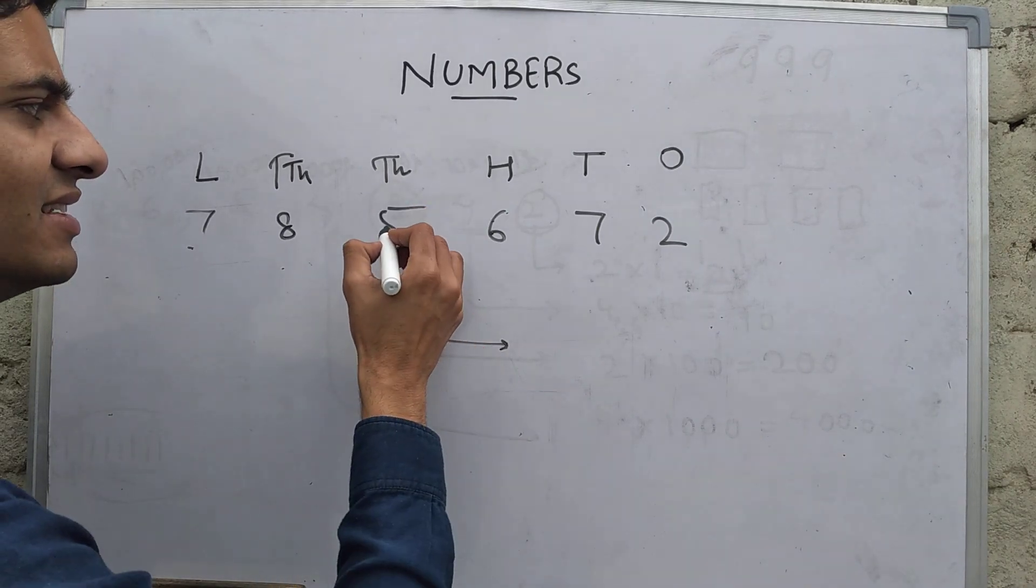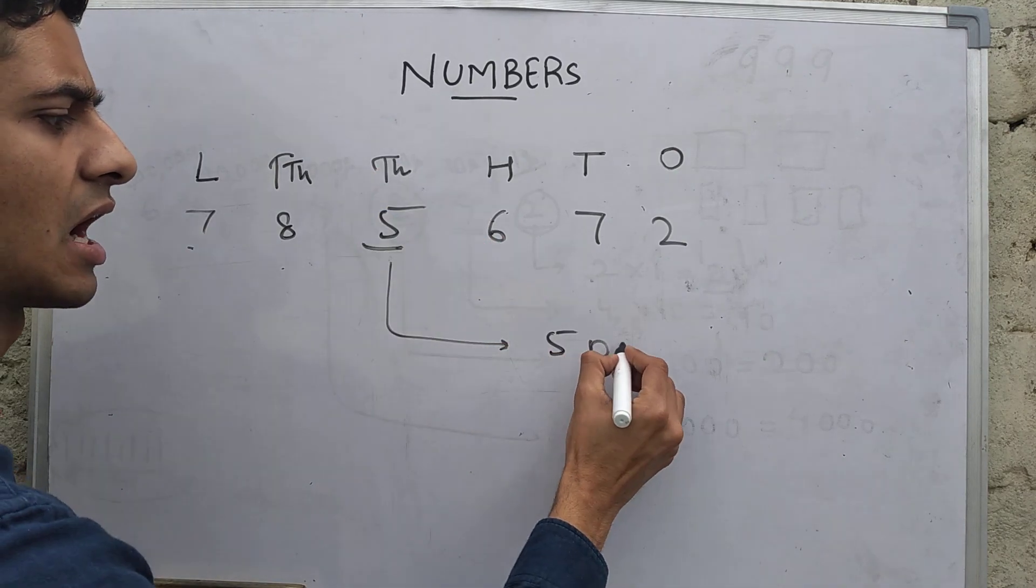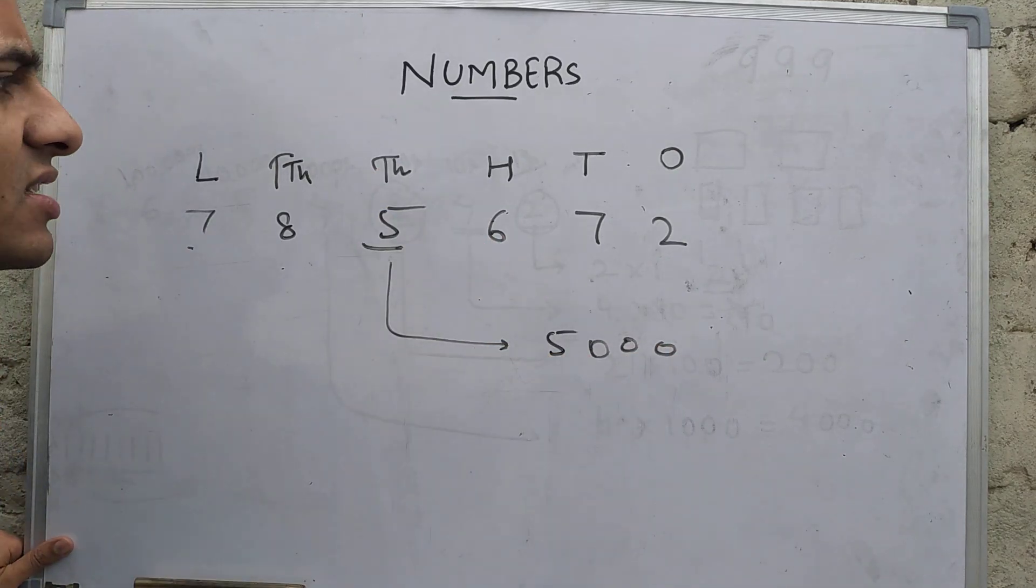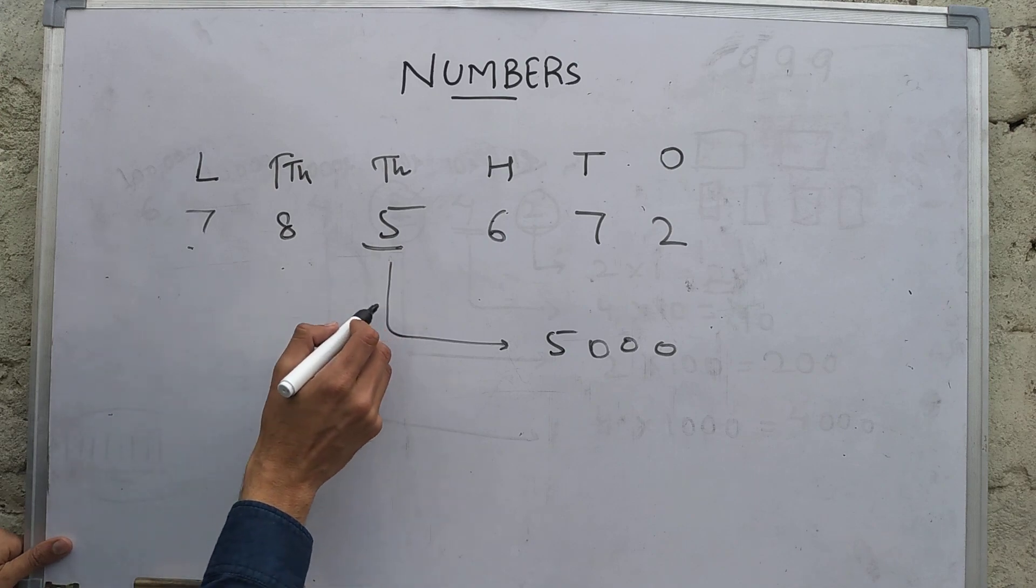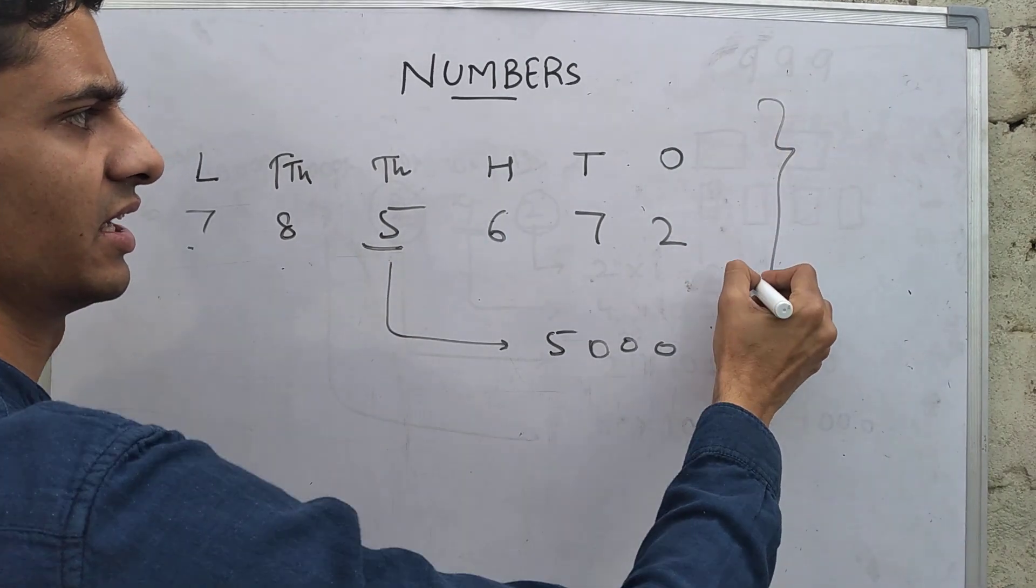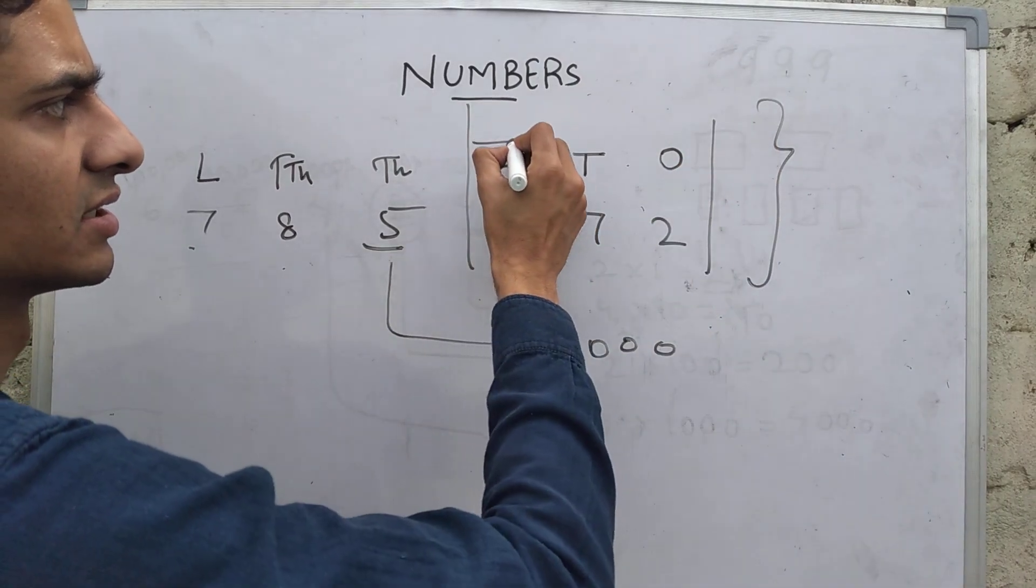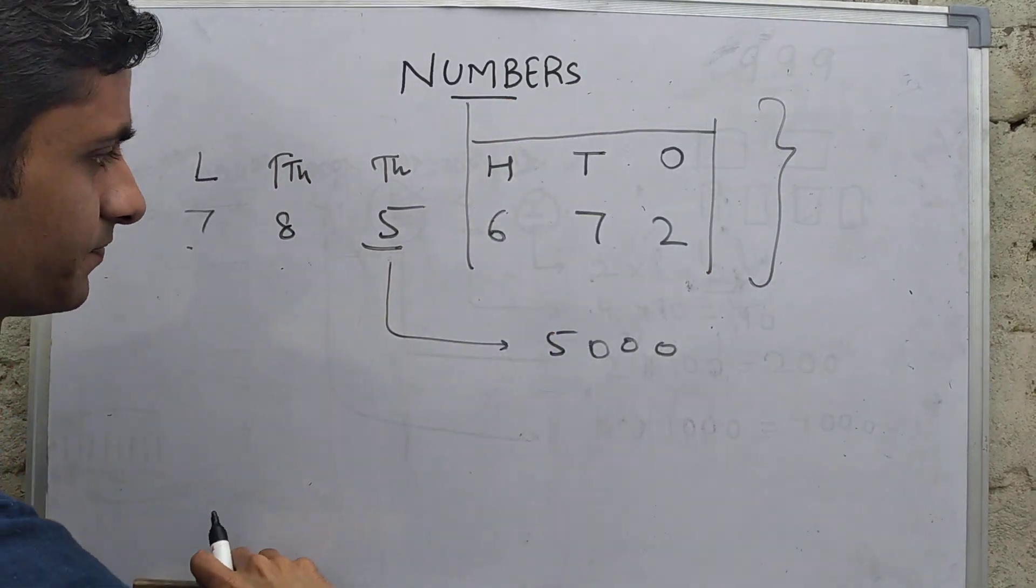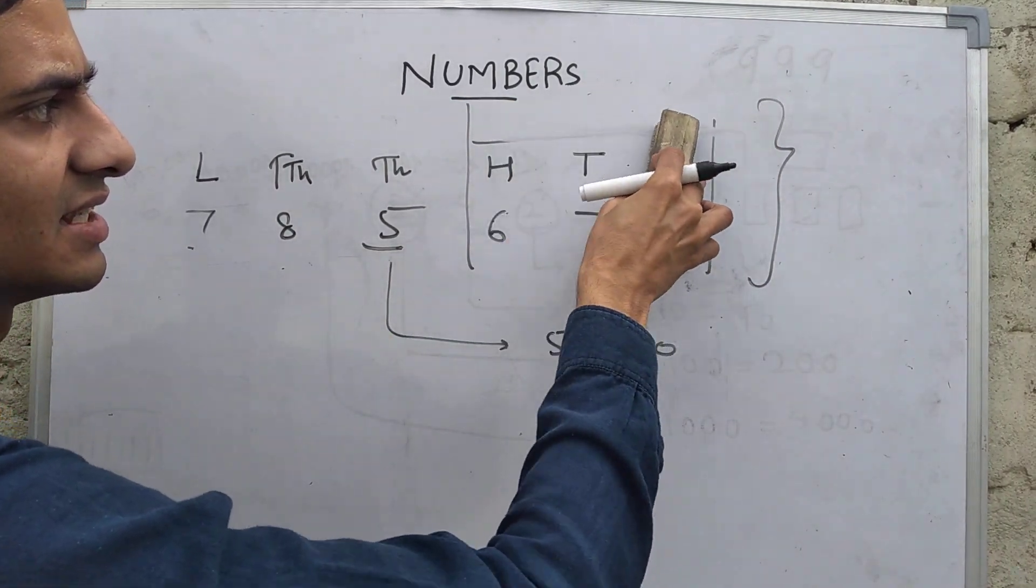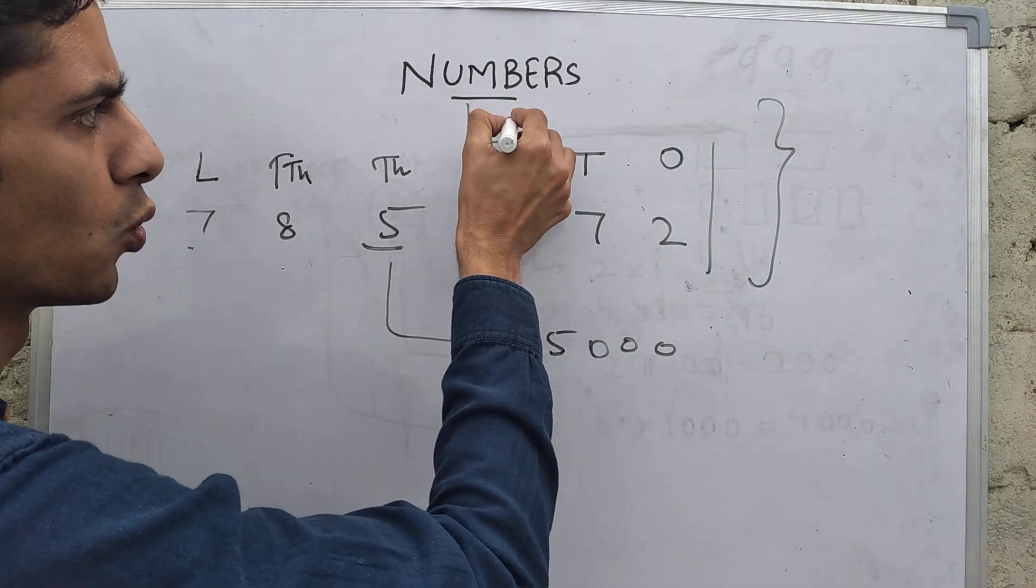So this five being at thousands place, you can straight away say that these are five thousands, so its place value is five thousand. So this thing that I have made, if along with it I write that this is—what is it? This together we call it ones period.